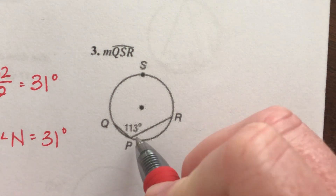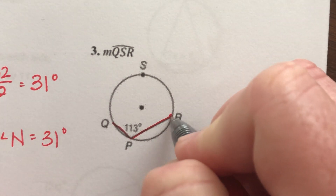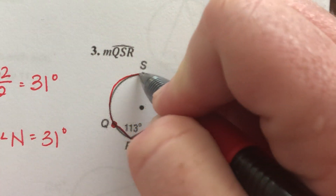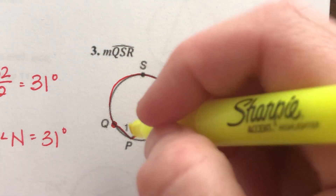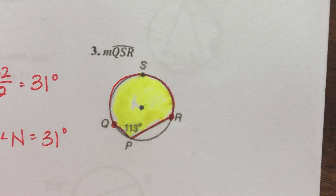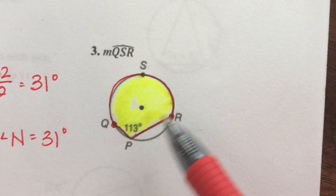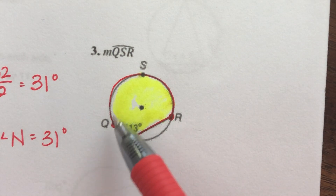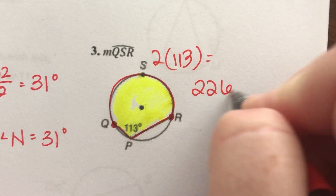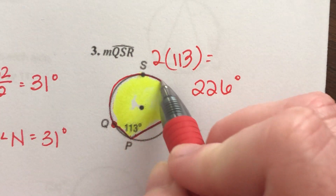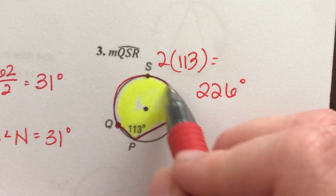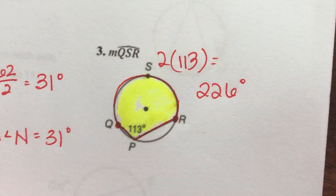Here's the next angle. The lines meet the circle at points R and Q, so all of this is the intercepted arc. If you were to shine the flashlight here, it would touch all of this circle — that's the intercepted arc. The angle is half the arc, and the angle is 113 degrees. So 113 times 2 is 226 degrees. This whole arc is 226 degrees, and that makes sense because it's over half our circle — over half of 360 degrees.